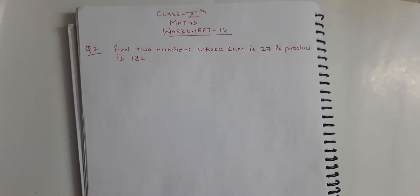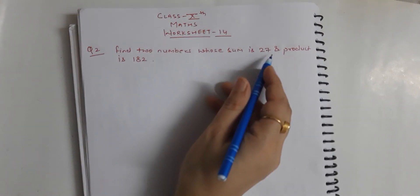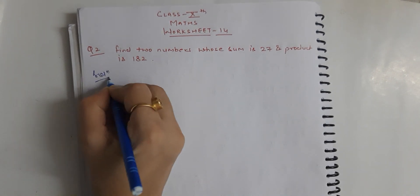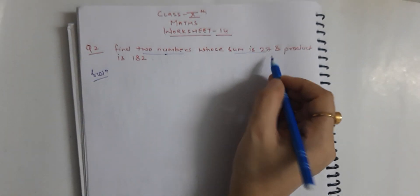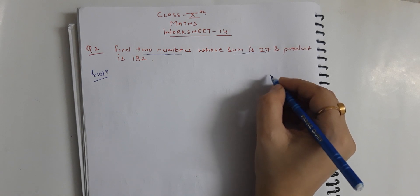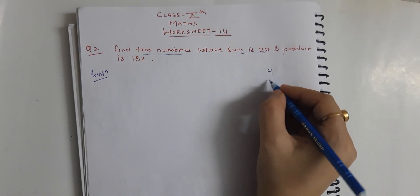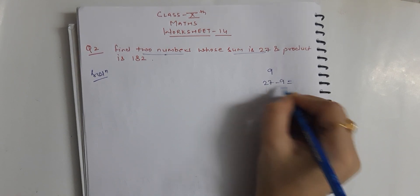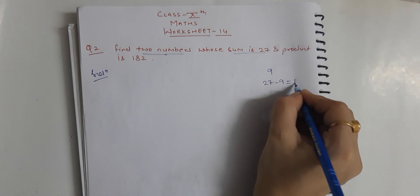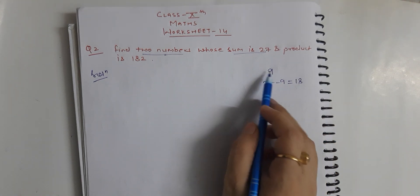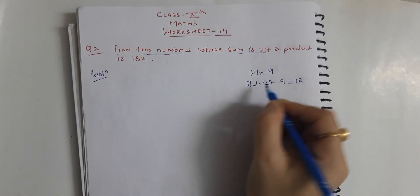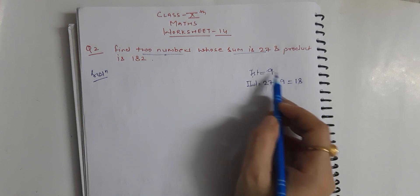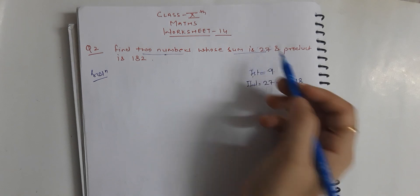Hello students, this is question number 2 from worksheet 14. The question is: find two numbers whose sum is 27 and product is 182. To start, let's try some numbers — if one number is 9, then 27 minus 9 is 18. So 9 and 18 is an example: 9 plus 18 equals 27. The first number is 9 and the second number is 18.